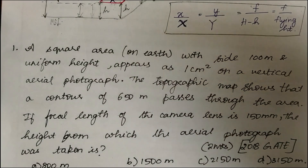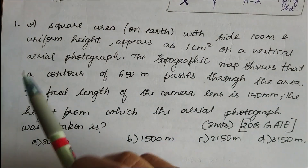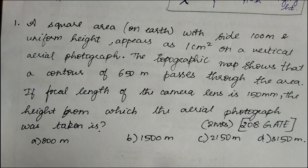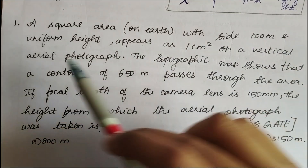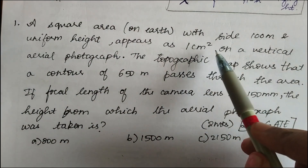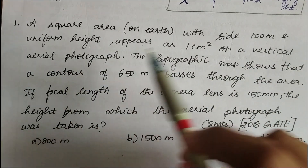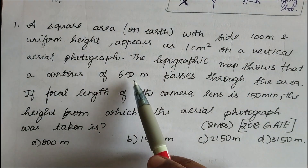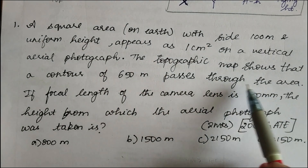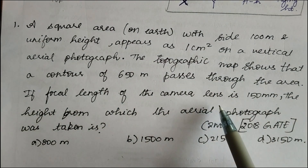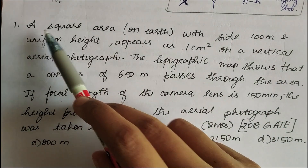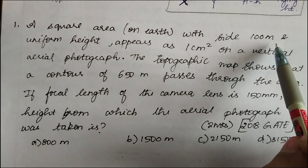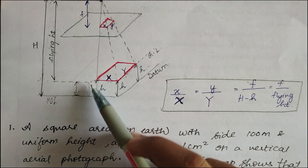Let's go through an example asked in GATE 2018 for two marks. A square area on Earth with a side of 100 meters and uniform height appears as 1 centimeter square on a vertical aerial photograph. The topographic map shows a contour of 650 meters passing through the area. The focal length of the camera lens is 150 mm. Find the height from which the aerial photograph was taken.